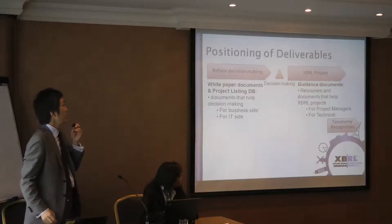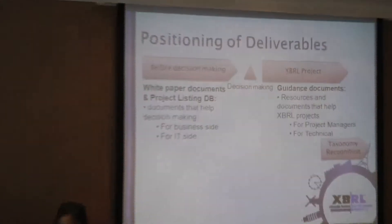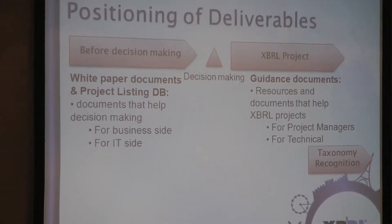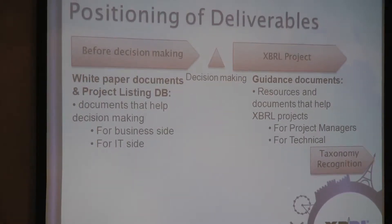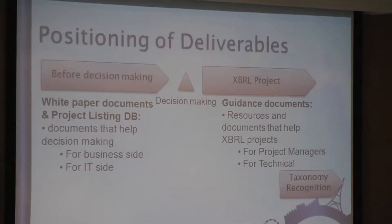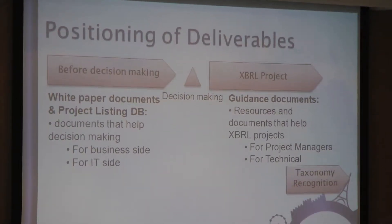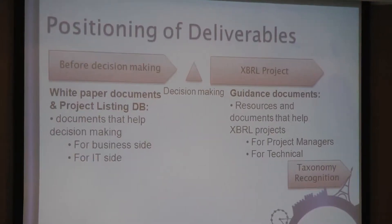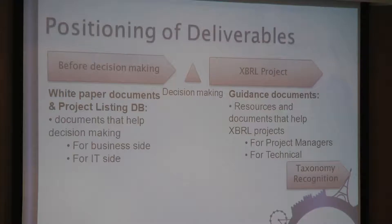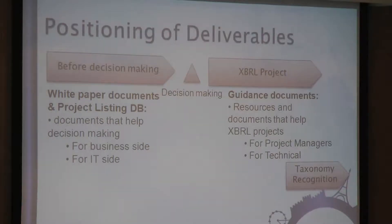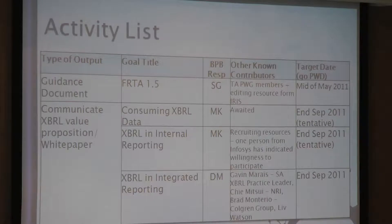For every project manager, they need to make a decision to adopt XBRL or adapt to other technologies. Before decision making they need detailed information about XBRL — so this is where the white paper and project listing database comes in. After the project manager makes the decision, guidance documents and checklists are really helpful. And in the later phase after the taxonomy is developed, some project managers need a third-party certificate for evaluation of the taxonomy, so the taxonomy recognition process really fits that phase. The list of activities this year includes FRTA 1.5 — a good guidance document for taxonomy development. The current status of the FRTA development is it's a public working draft, and we are going to upload the latest FRTA 1.5 public working draft this week.